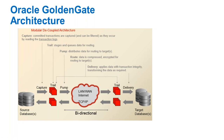Each process in GoldenGate has its own role. There are three processes: Capture, Pump, and Delivery. Capture reads transaction logs and writes to local trail. Pump reads local trail and writes to remote trail. Delivery (replicat) reads remote trail and applies to the target database. Each process has a source to read from and a target to write to.